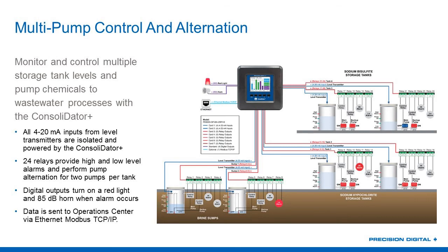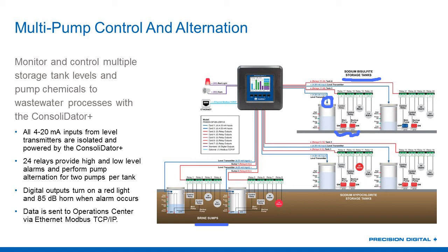A more common application for the Consolidator Plus is monitoring tanks or sumps at multiple locations. Here we've got our Consolidator Plus looking at four sodium bisulfate storage tanks and two brine sumps. Every one of these storage tanks has a pair of relays for pump alternation control, a level transmitter at the top of the tank bringing in a 4 to 20 — which is what's going to control those relays — and then a set of high and low alarms being read off of that level transmitter.